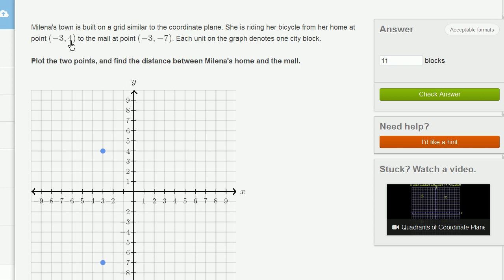So if I were to say 4 minus negative 7, we would get this distance right over here. So we have 4 minus negative 7, which is the same thing as 4 plus 7, which is 11.